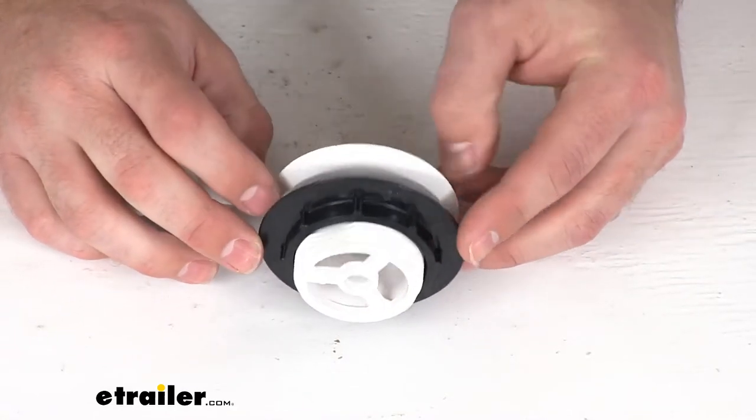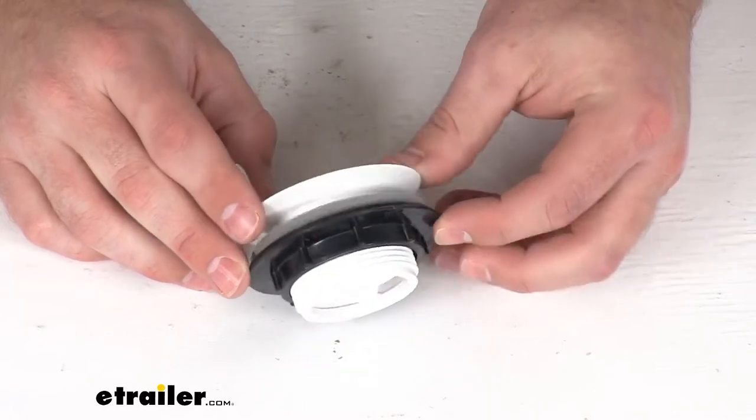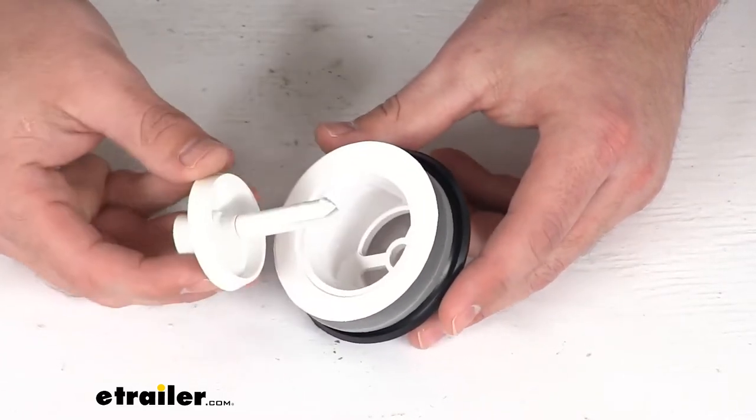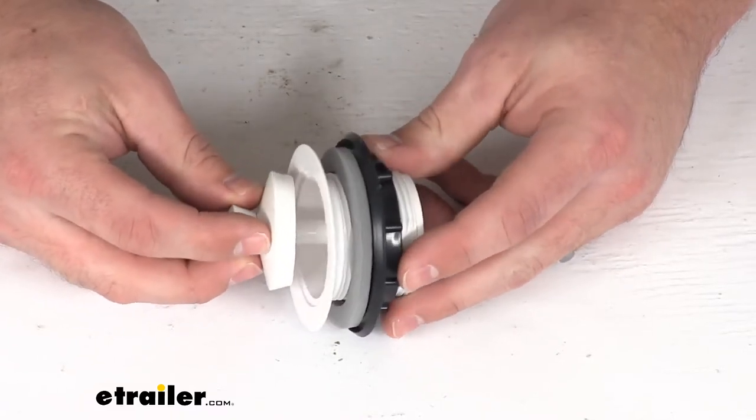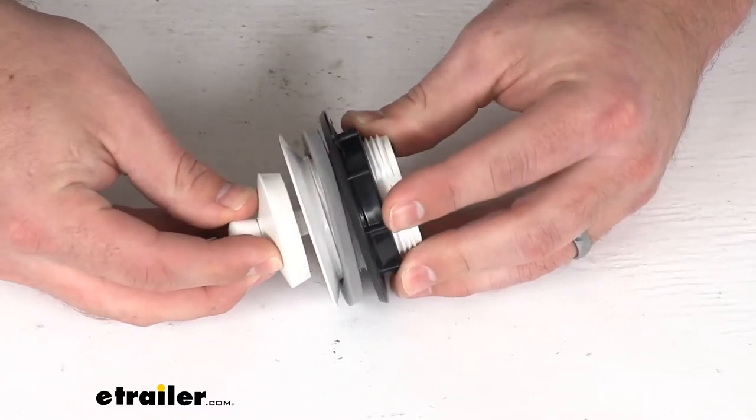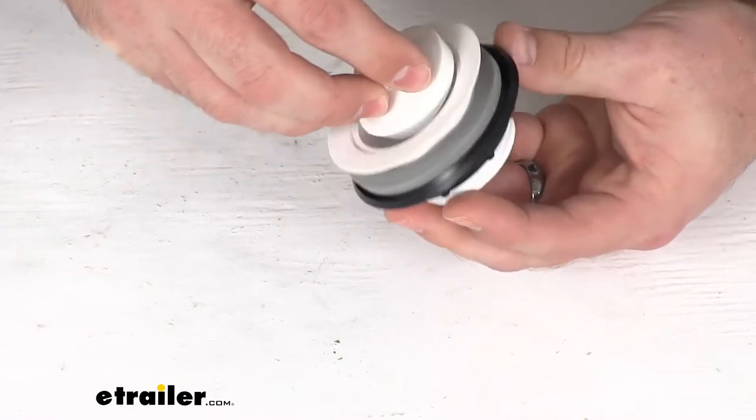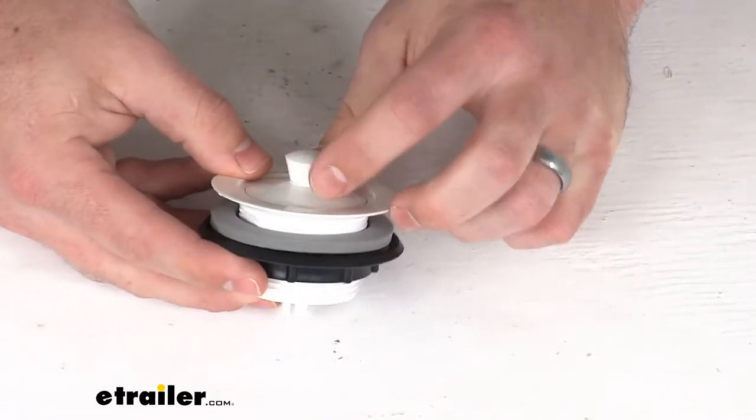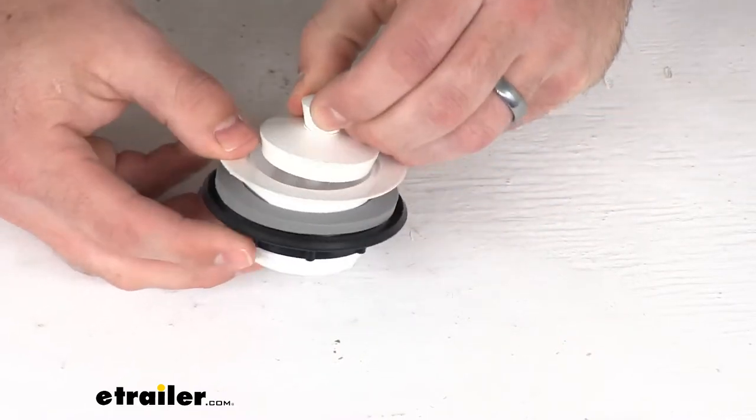This is going to replace a worn out or damaged strainer and stopper in your RV's sink. You can see this does have the pop-stop stopper there that will just go into that middle section and will allow us to put that stopper down, raise it up.